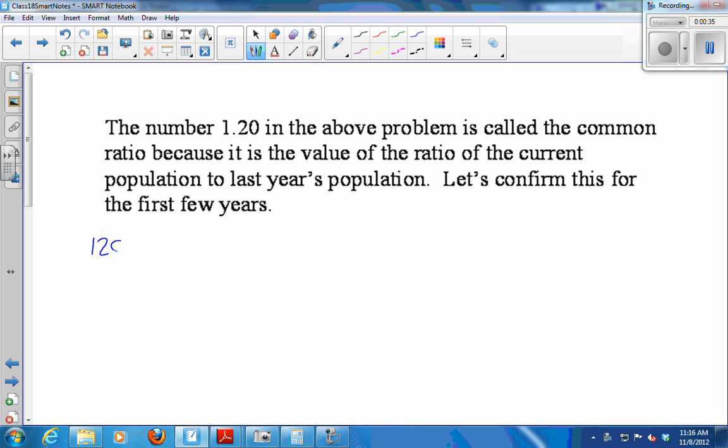So if I do 1,200 over 1,000, I get 1.2. If I do 1,440 over 1,200, I get 1.2. So any year's population divided by the year before it is always going to give you 1.2. 1728 over 1440, 1.2.